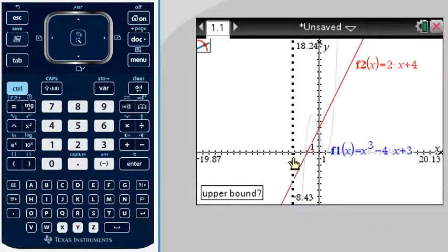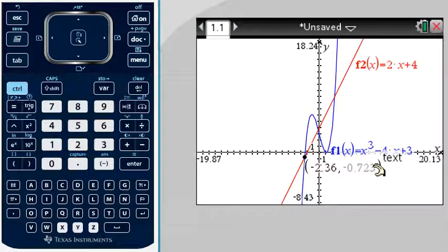So we go lower bound and upper bound of the first point of intersection. And there it is there. Negative 2.36, negative 0.723.